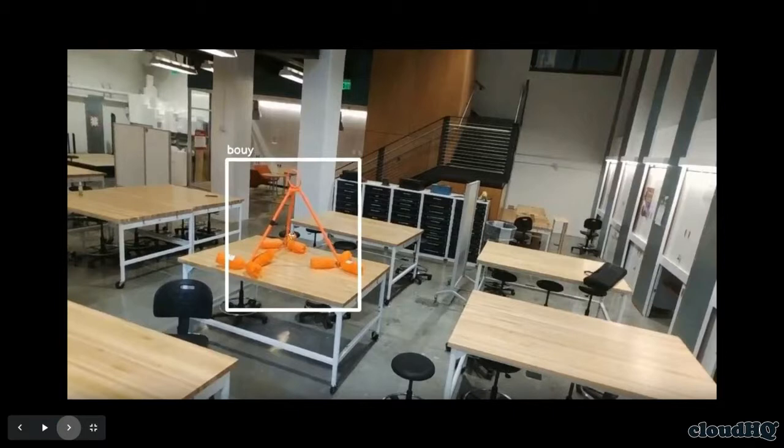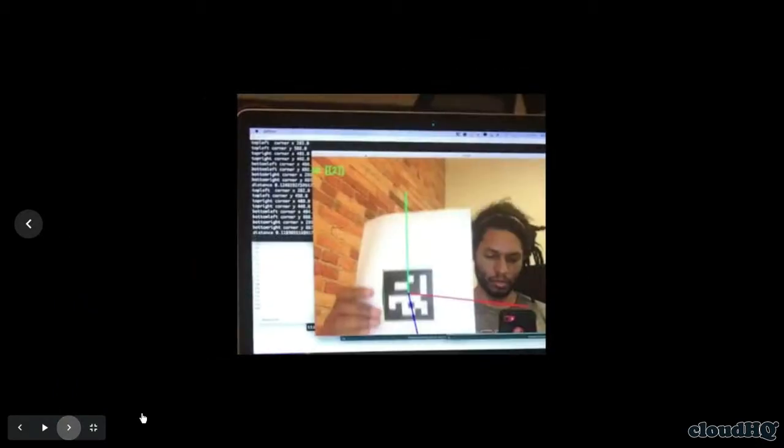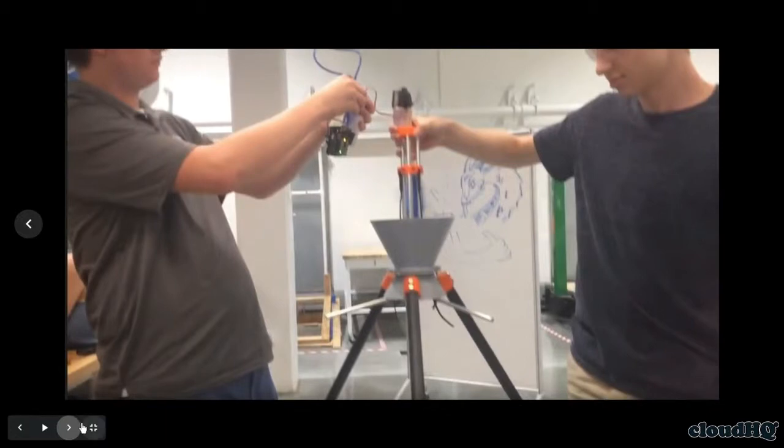And then uses these fiducials on the drone to get very precise, within a centimeter location for recovering the drone. Once we do that, we lower this device into the top of the floating chamber and it picks it up.